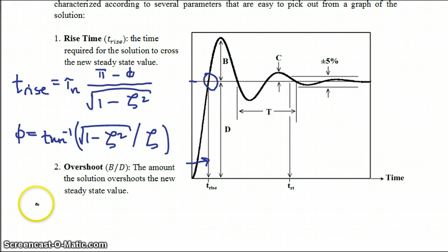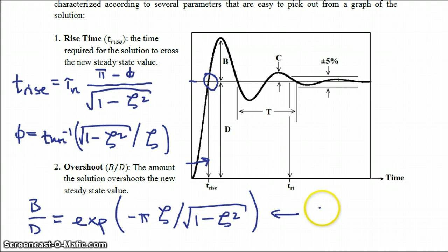So this overshoot ratio, b over d, can also be solved for analytically. And that's equal to e to the power minus pi times your damping factor zeta, divided by the square root of 1 minus your damping factor squared. And as you can see here, you can estimate this completely from your damping factor.